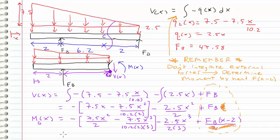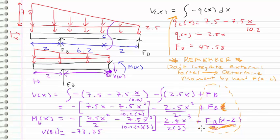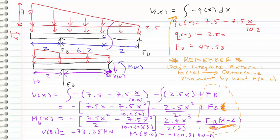Now we can plug in the location of C into these two equations. I did it and found that V(8.2 meters) is equal to negative 73.25 kilonewtons — shear is just a force, and we're working in kilonewtons. And for the moment at 8.2 meters, M(8.2) equals negative 120.31 kilonewton-meters, because it's a moment and distance is involved.